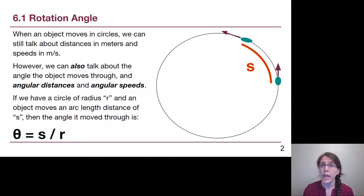If we have a circle of radius R and an object moves from point A to point B along that circle, then we can describe its arc length using the letter S. I know arc length doesn't have the letter S in it, but that's what we're going to use.